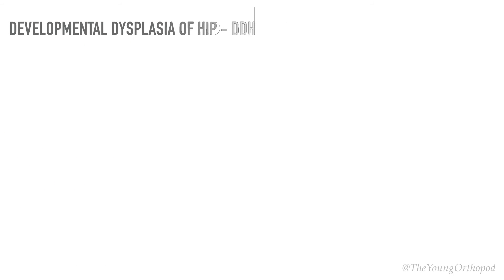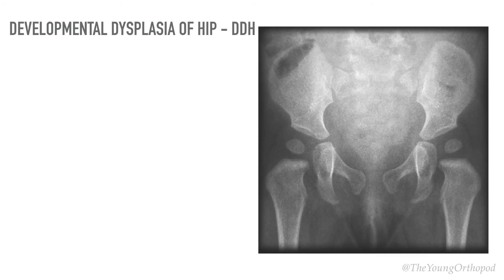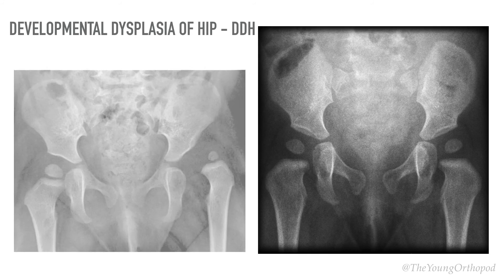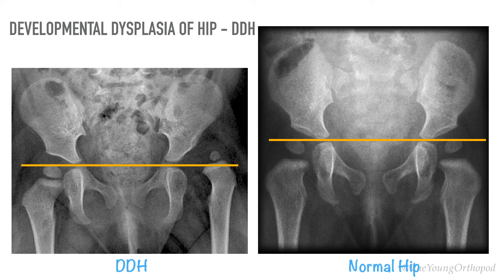Radiographs are the modality of choice in older infants for both diagnosis and follow-up of developmental dysplasia of the hip. In a dislocated hip, the femoral metaphysis lies lateral to the Perkins line and Shenton's line is broken.